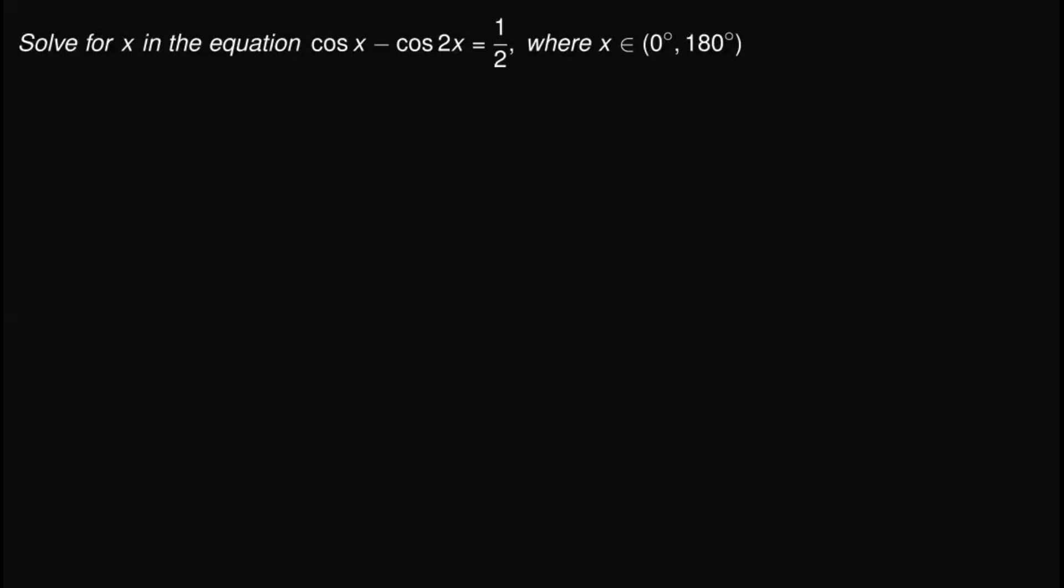To start solving this problem, we must first know that cosine 2x is actually equal to 2 cosine squared x minus one. We have arrived at this due to what we call the double angle identity. So take note of that one.